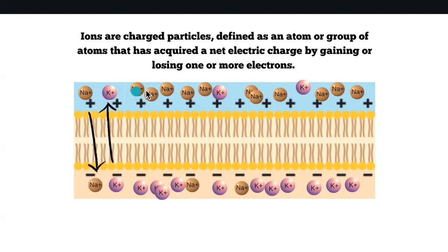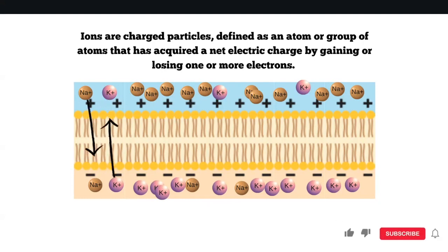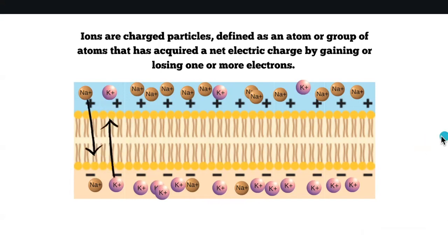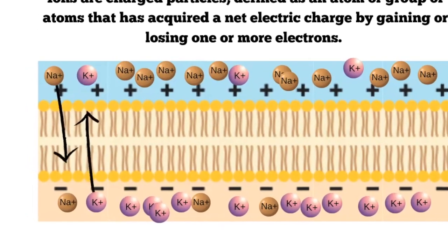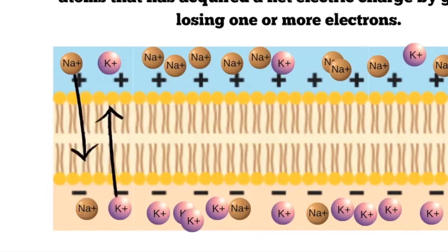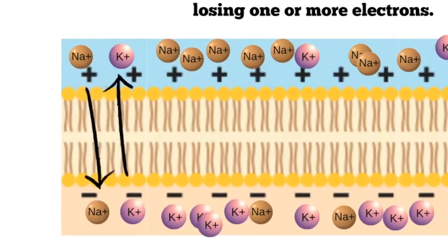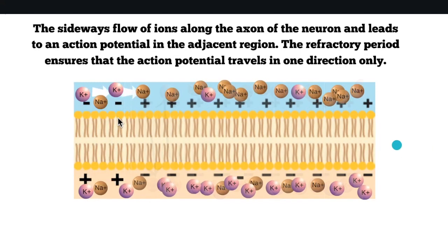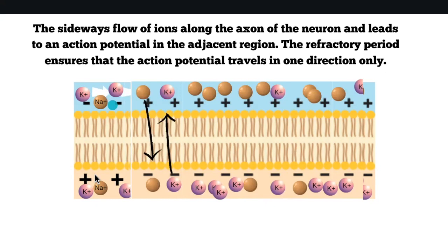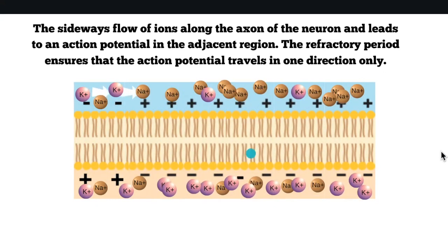Ions are charged particles — defined as an atom or group of atoms that has acquired a net electrical charge by gaining or losing one or more electrons. What happens is there will be an exchange: sometimes sodium goes in and potassium will go out. They like to move toward similar concentrations — it's about the movement down a concentration gradient. So this area becomes negative and that becomes positive, then it resets, and the signal moves along.